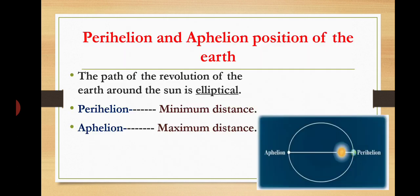Perihelion and aphelion position of the Earth: the path of the revolution of the Earth around the Sun is elliptical. Perihelion means minimum distance from the Sun; aphelion means maximum distance from the Sun.